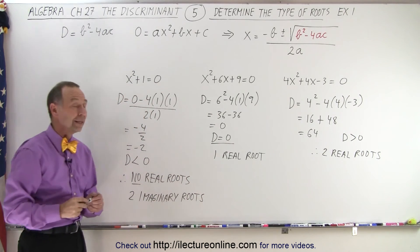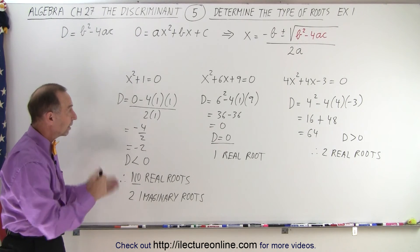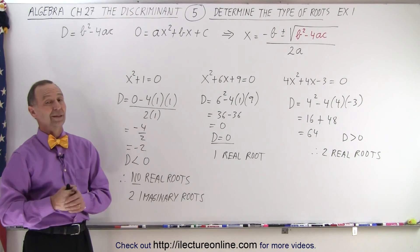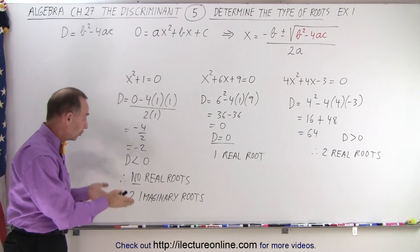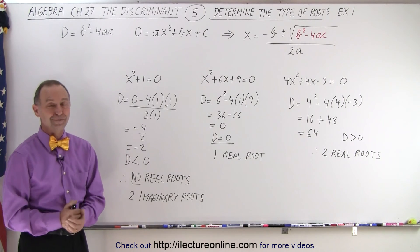And so very quickly, we can see by simply calculating the discriminant, if we're dealing with two real roots, one real root, or no real roots. And that is how it's done.